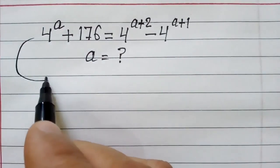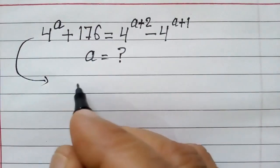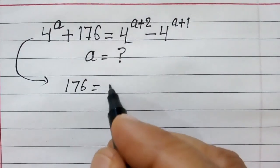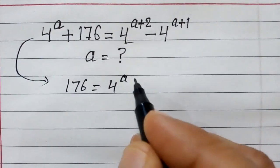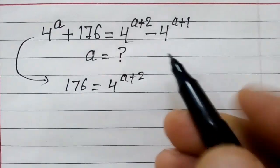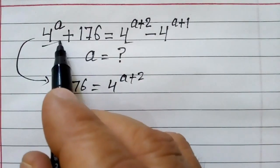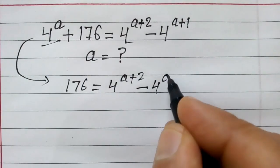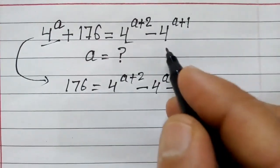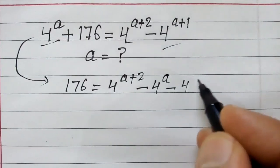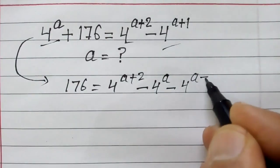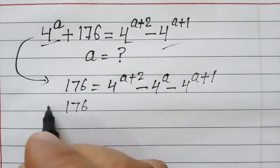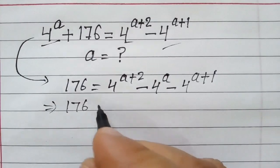First we will rearrange this equation as 176 is equal to 4 to the power a plus 2, and we will shift this from the left hand side to the right hand side: minus 4 to the power a, minus 4 to the power a plus 1. So, 176 is equal to...